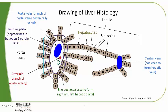So how does the blood flow through the liver? The portal vein gives venous blood into the sinusoids. The arteriole gives arterial blood into the sinusoids. The blood then mixes and enters the central vein.